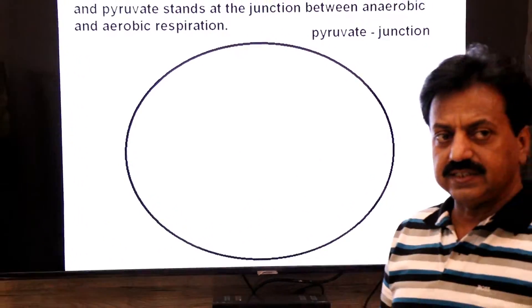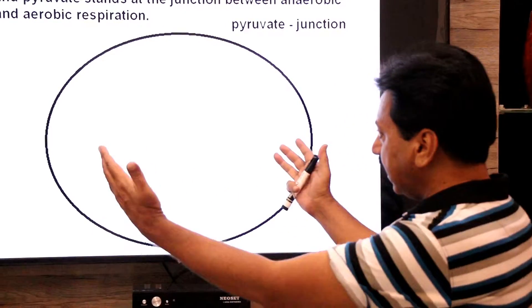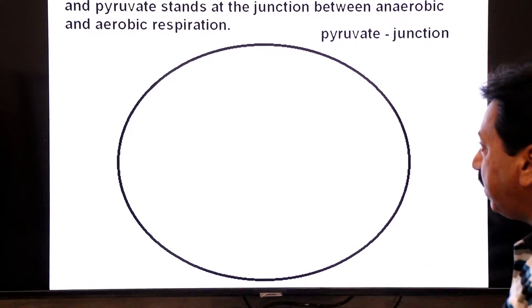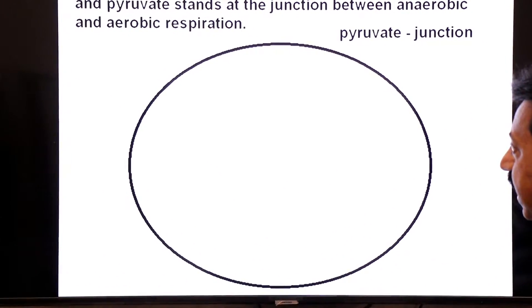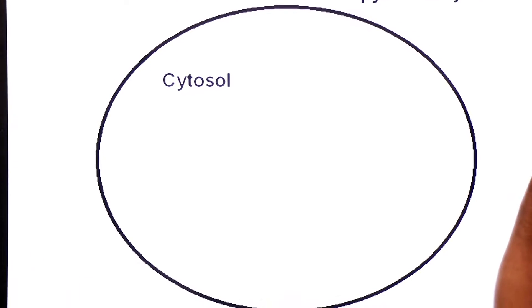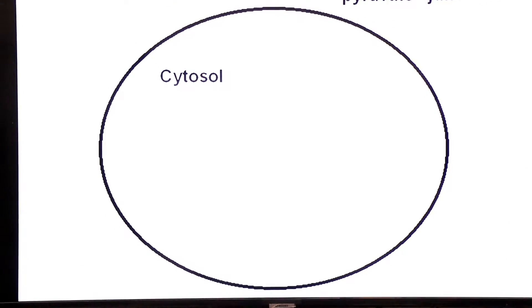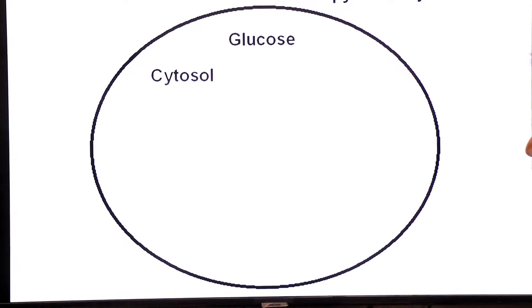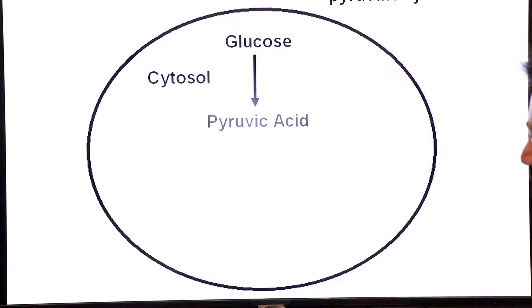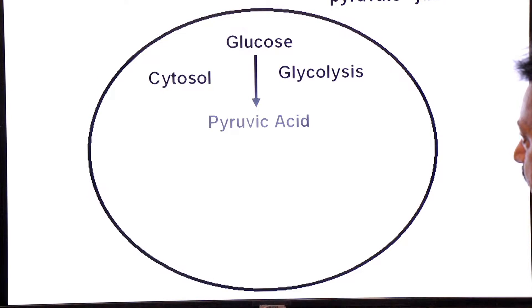This is a diagram showing the cell. In the cytosol, the process of glycolysis takes place — in the cytosol, glucose is broken into two molecules of pyruvate acid by a process called glycolysis.